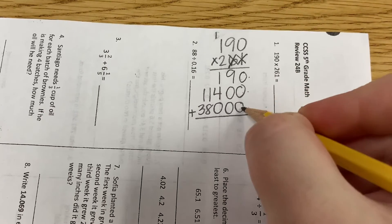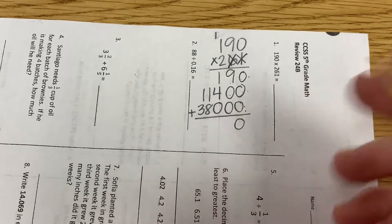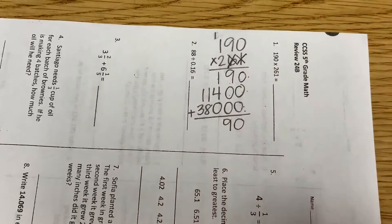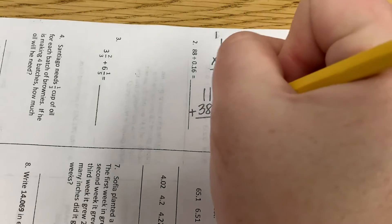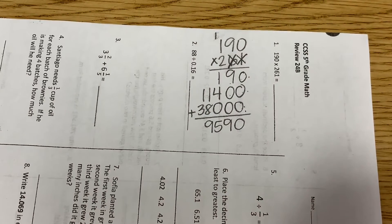Zero plus zero plus zero. Zero. Nine plus zero plus zero. Nine. One plus four. Five. One plus eight. Nine. And one plus three. Four.